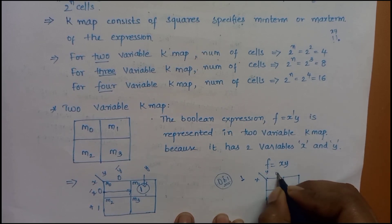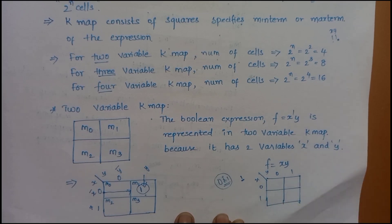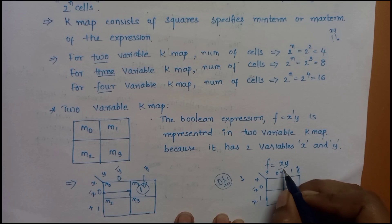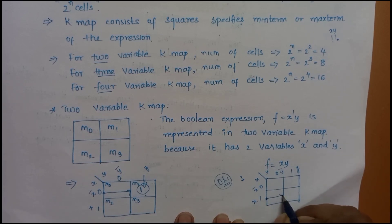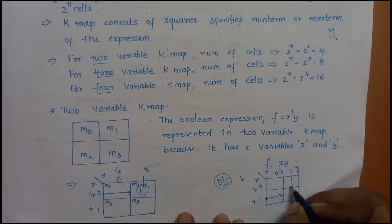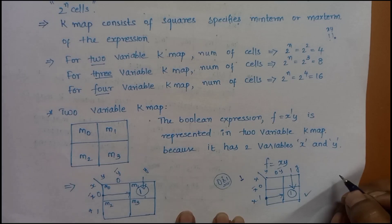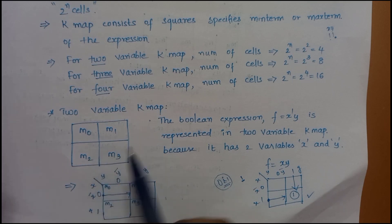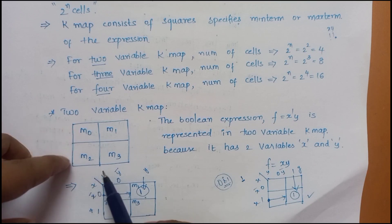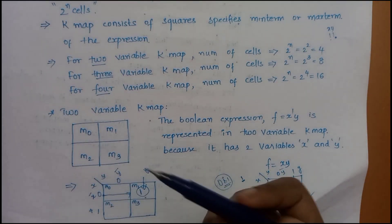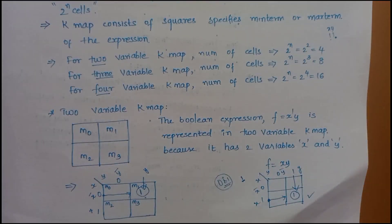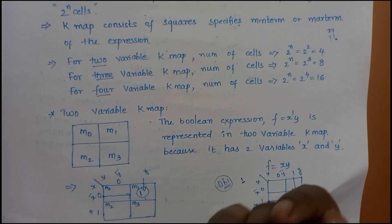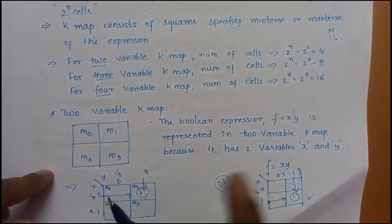The K-map has variables x and y, with values 0 and 1. Here, 0 means x-dash, 1 means x, 0 means y-dash, 1 means y. x is placed in the row and y in the column. The 4 cells are labeled m0, m1, m2, m3. When a boolean expression is given, we represent it directly in the K-map using these cell numbers.